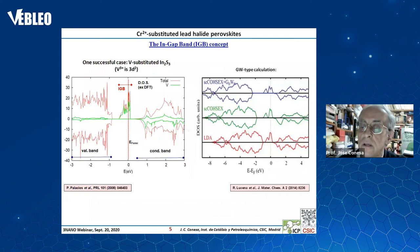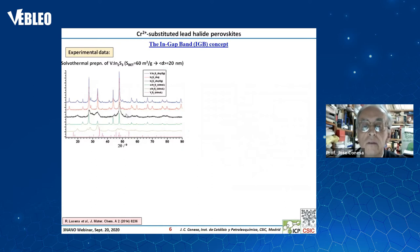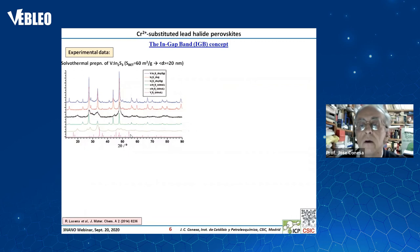We have been fortunate in that we have been able to experimentally make the substitution of vanadium in indium sulfide. As you can see here, these are diffractograms, and in the case of vanadium-substituted indium sulfide we see a mixture of two phases — the beta and gamma phases of indium sulfide — but no hint of any independent crystallization of a vanadium sulfide phase such as V2S3.